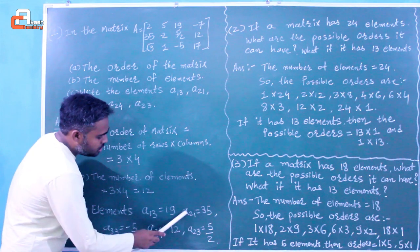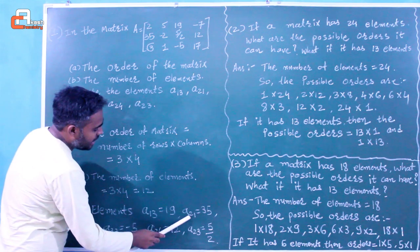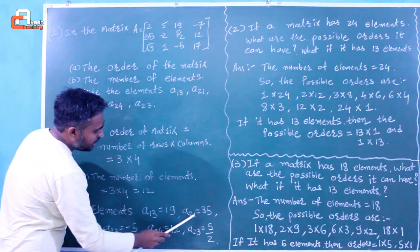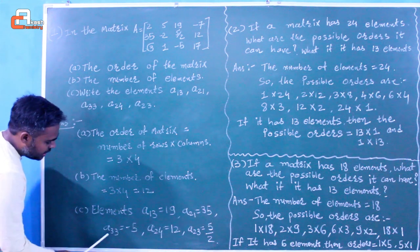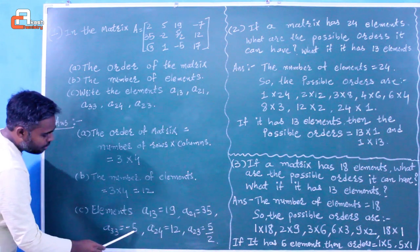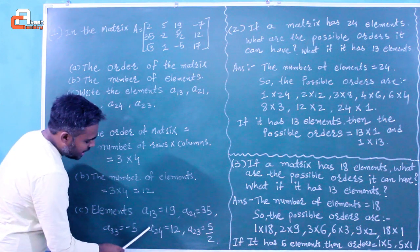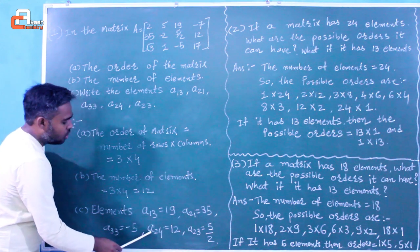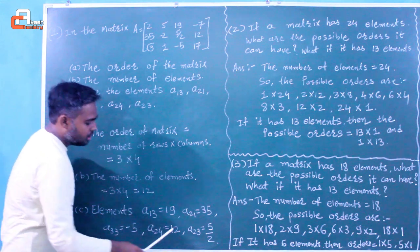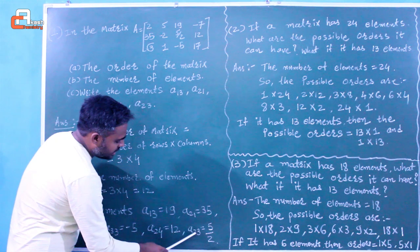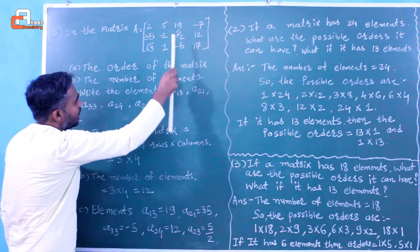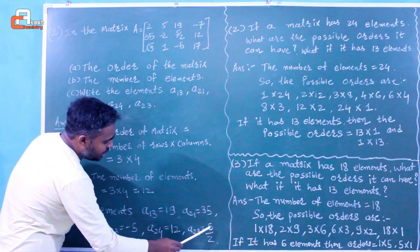Similarly, a21 lies in the second row and first column, so a21 equals 35. For a33, it lies in the third row and third column, so a33 equals minus 5. For a24, the element lies in the second row and fourth column, so a24 equals 12. For a23, the element lies in the second row and third column, so a23 equals 5 by 2.